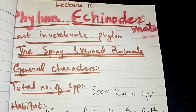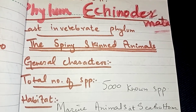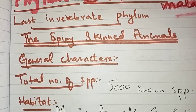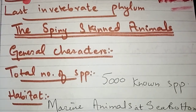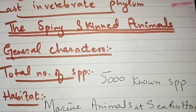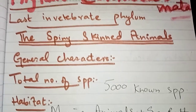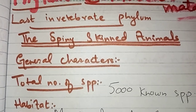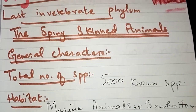Bismillahirrahmanirrahim, Assalamualaikum. Today we will discuss lecture number 11, which is Phylum Echinodermata. This is the last invertebrate phylum of chapter number 10, Animalia. These animals are commonly termed as the spiny-skinned animals because there are calcium structures in these animals which are mesodermal in origin.